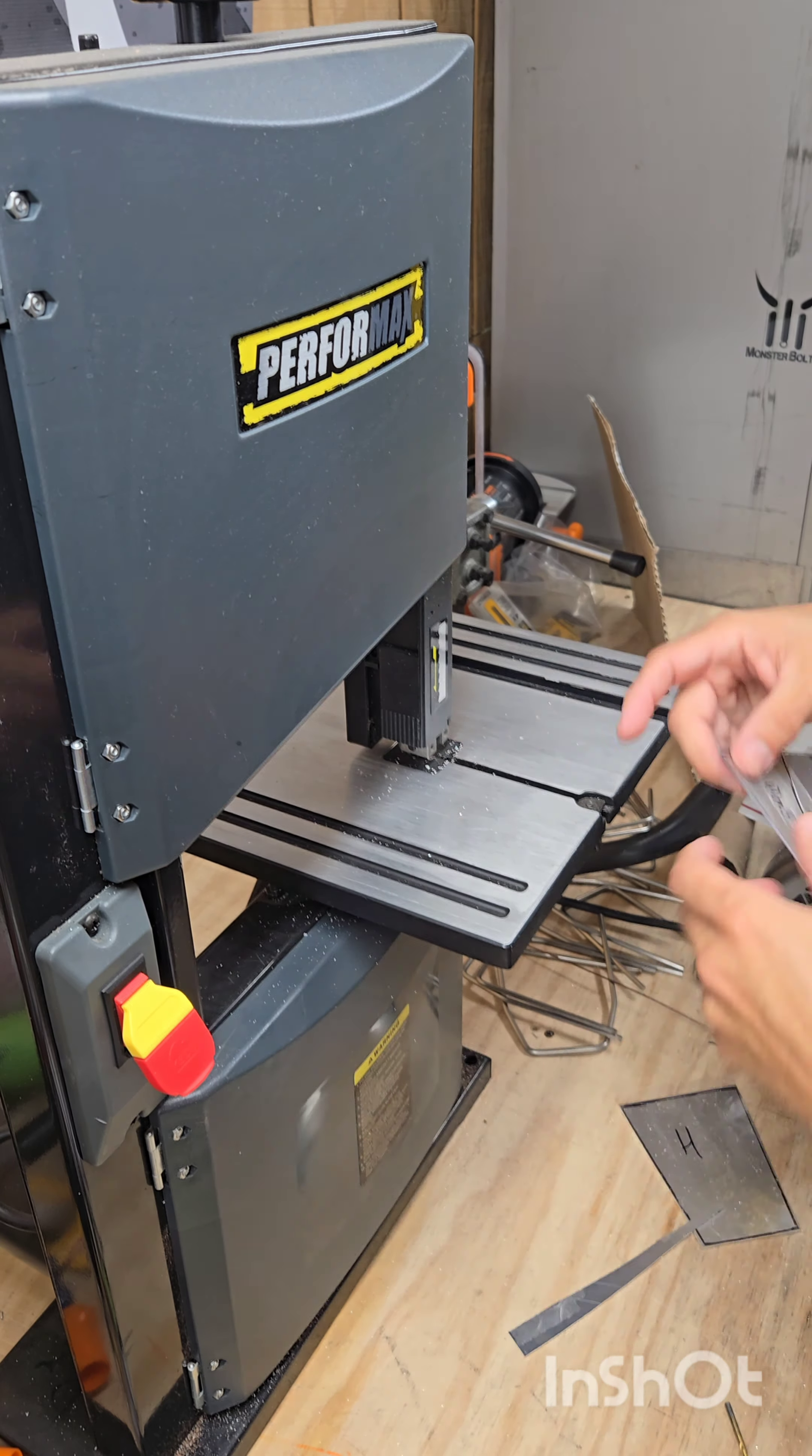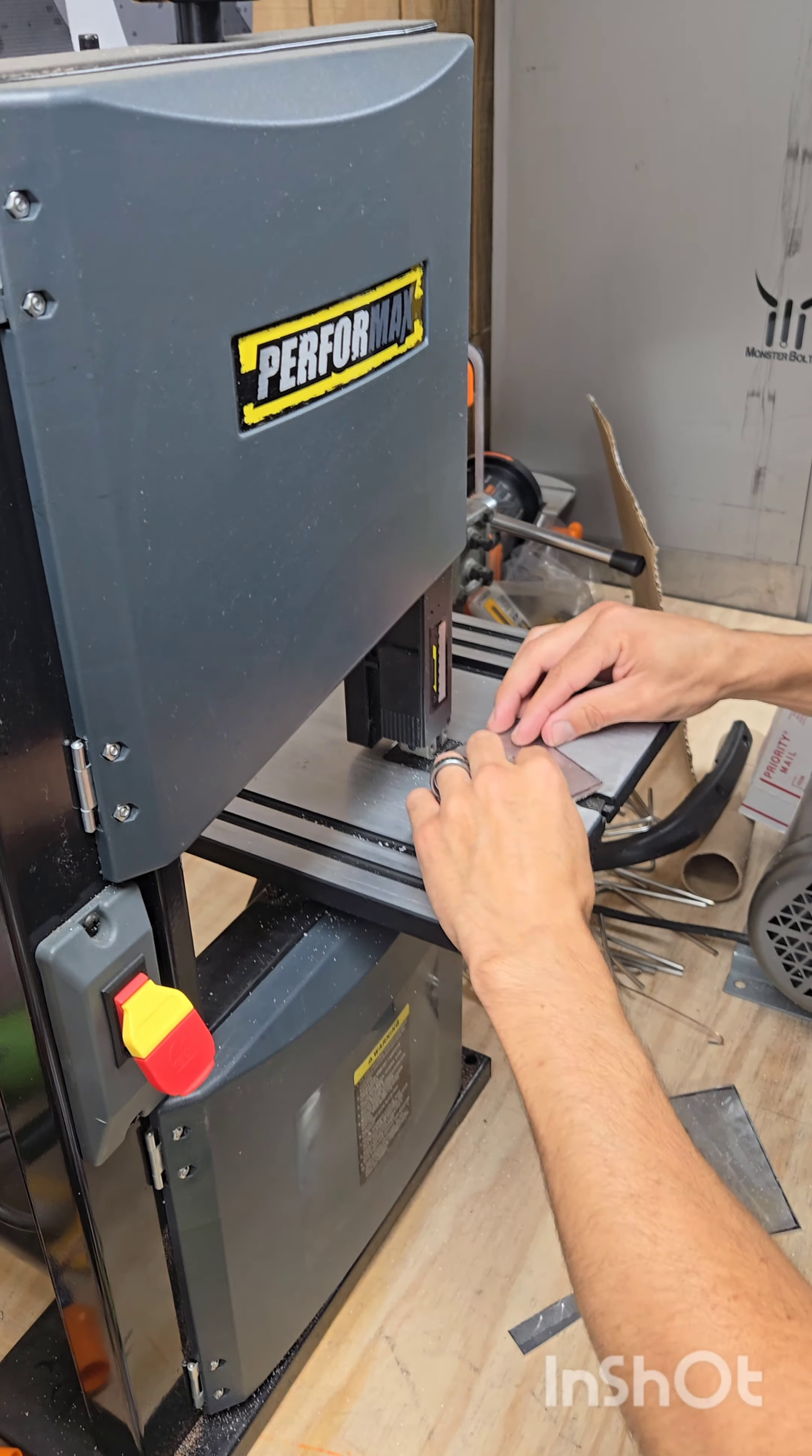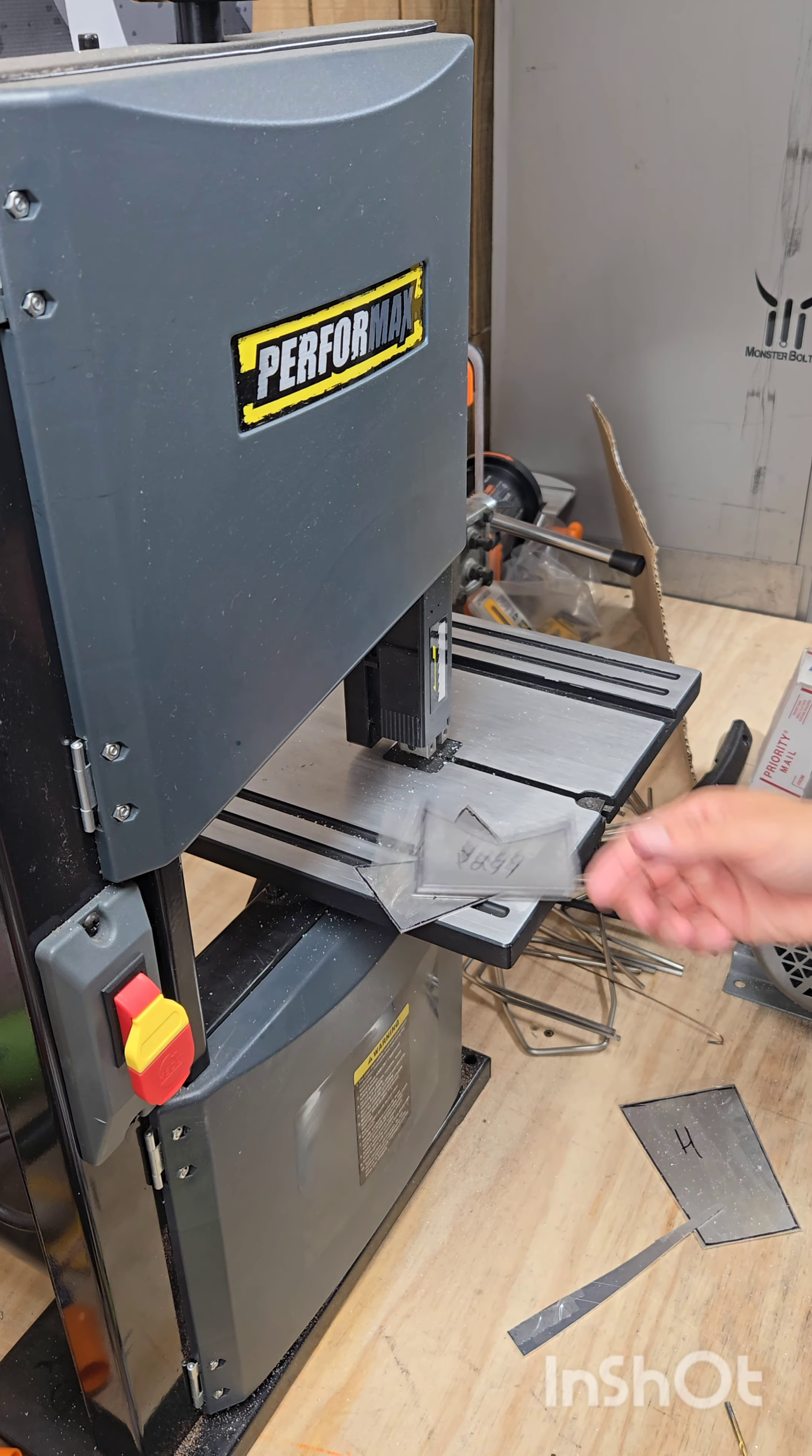I've shared this technique before where you place clear tape over the chassis and then you literally outline your panel in a Sharpie and then transfer that over to a piece of sheet metal.